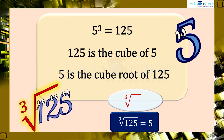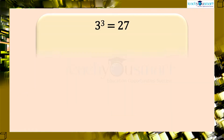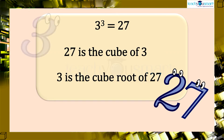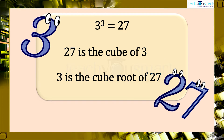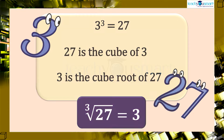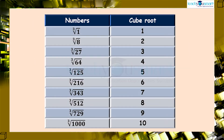Here, the radical symbol denotes cube root. Similarly, in 3 cubed equals 27, 27 is the cube of 3 and 3 is the cube root of 27. That is, the cube root of 27 is equal to 3. The table shows the cube root of some numbers.